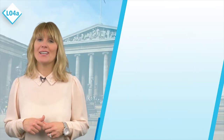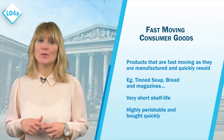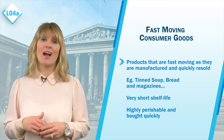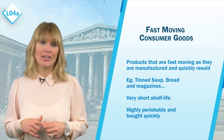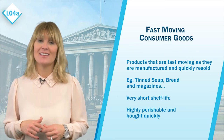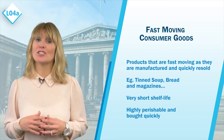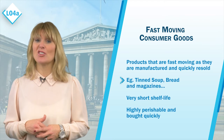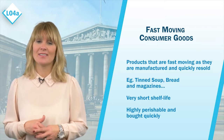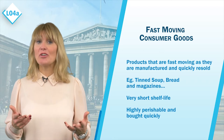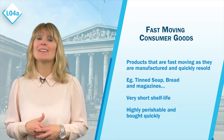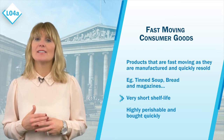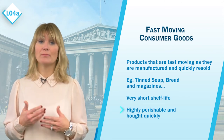Let's begin by looking at fast-moving consumer goods, which I'll refer to as FMCGs. Products in this category are high volume, low unit value, and fast repurchase items. They are called fast-moving as they are manufactured and resold quickly. An example of this type of product includes most things you find in the grocery section of a supermarket — items such as tinned soup, bread, and magazines are all products classified as FMCG.